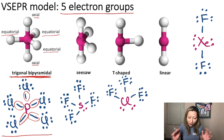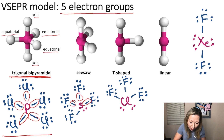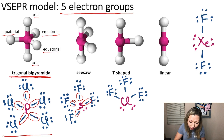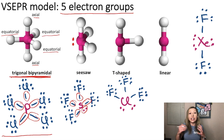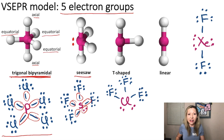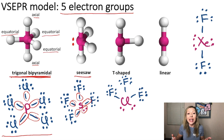If we have four bonding electron groups plus one lone pair, we are going to remove one of the equatorial atoms and place the lone electron pair there. We are going to get a seesaw structure, and this is the structure of sulfur tetrafluoride.